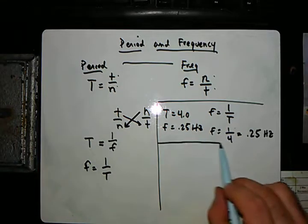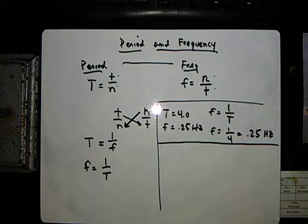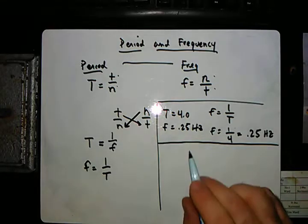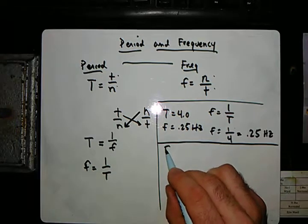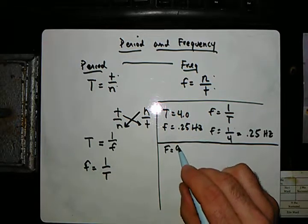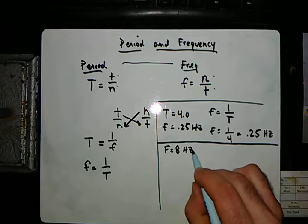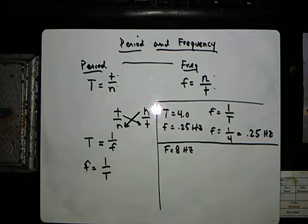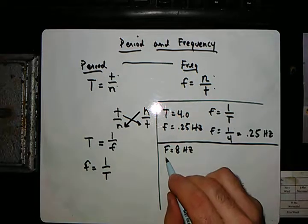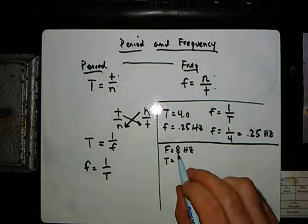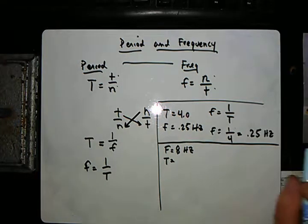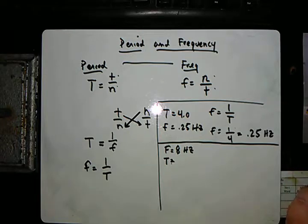Now if we look at another one, it says an object is revolving around with a frequency of 8 hertz. What's its period? So this is 8 cycles per second. What's the period here?